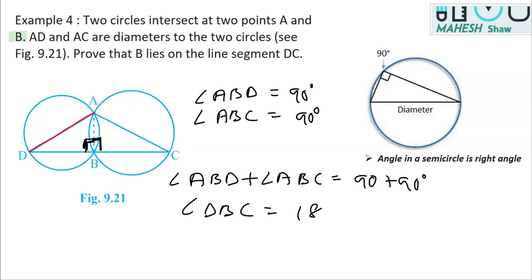DBC is equal to 180 degrees, and from the property of linear pair, I can say therefore DBC is a line. And if DBC is a line, it implies that B lies on DC. So this is what we had to prove, and we proved it.